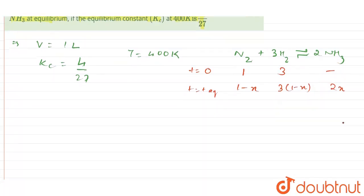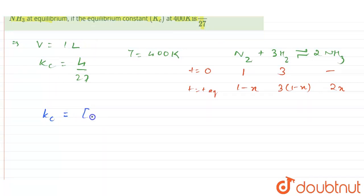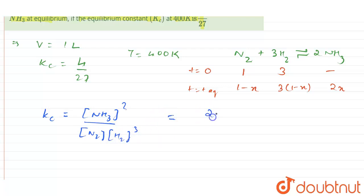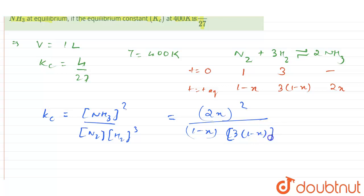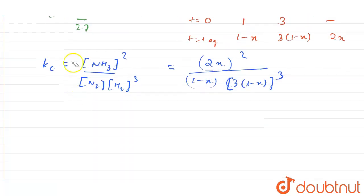Now we write the Kc formula: Kc equals the concentration of NH₃ squared, divided by the concentration of N₂ times the concentration of H₂ cubed. Substituting, this becomes (2x)² divided by (1 − x) times (3(1 − x))³. The Kc value is 4/27.